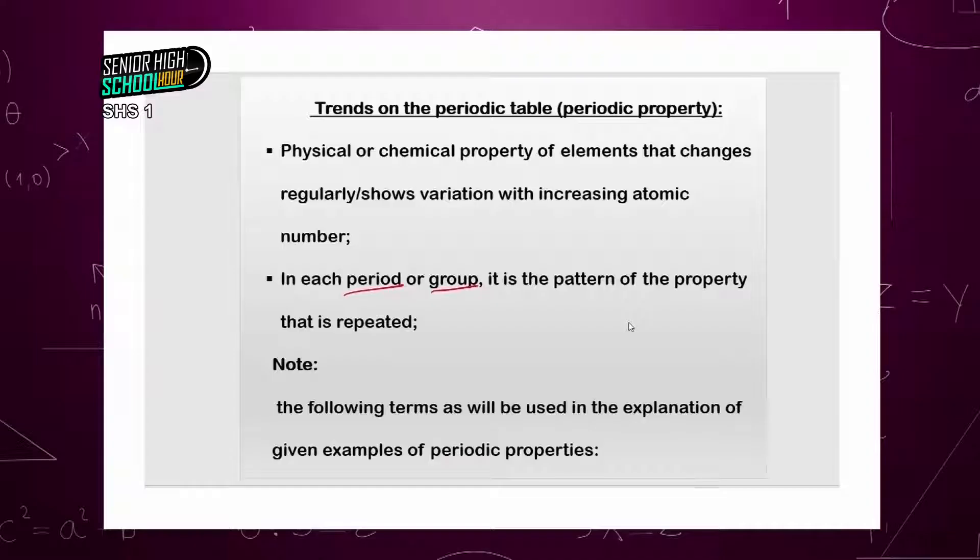So it is the atomic number, and of course the valence electron — the electron in the last shell of a given atom — that will determine the behavior of that particular element or atom. In each period or group, it is the pattern of the property that is repeated.